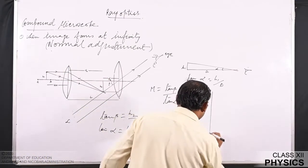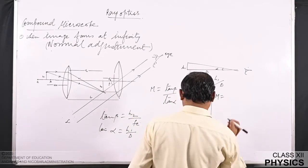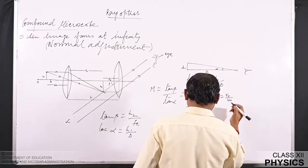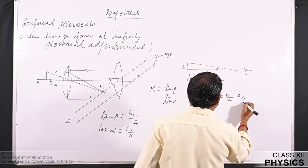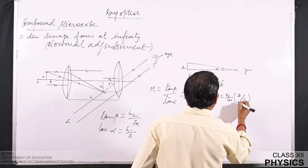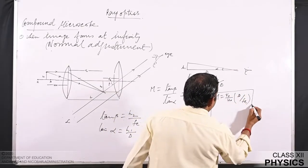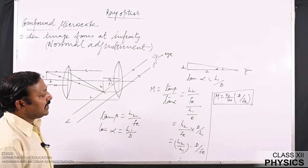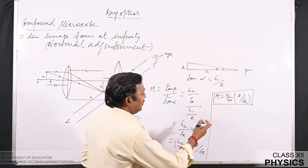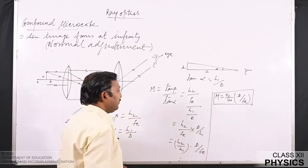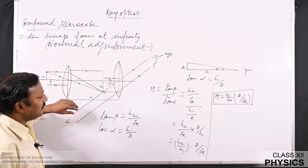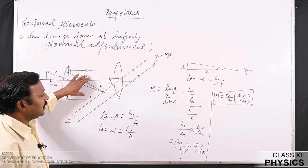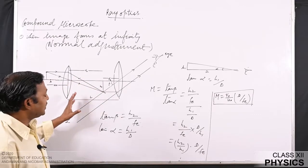The magnification produced by the objective can be written as h2/h1 = v₀/u₀, and here we have d/fₑ. So the magnification produced by the compound microscope when the image forms at infinity is m = (v₀/u₀) × (d/fₑ). The magnification when the image forms at infinity is slightly less than when the image forms at the distance of distinct vision, but here we can see the image without any stress on the eye.